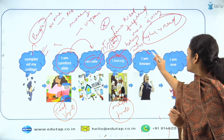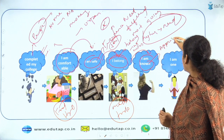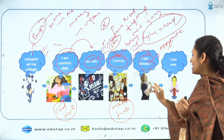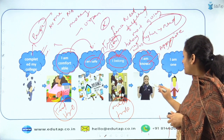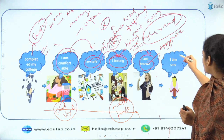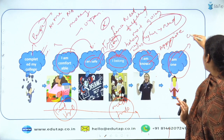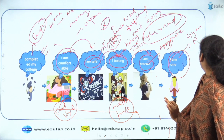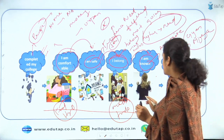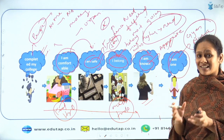Now she wants recognition. She wants her employers to appreciate her for her work. She wants people to know that she has done the task well — that is the next step. And finally, when she achieves all this, the last stage is self-actualization. Self-actualization means understanding the inner self — knowing what your needs actually are and being able to attain that.